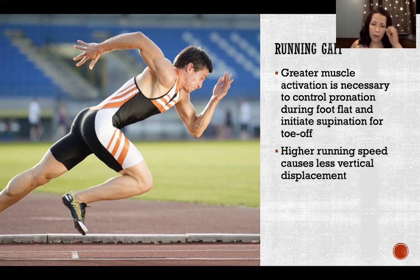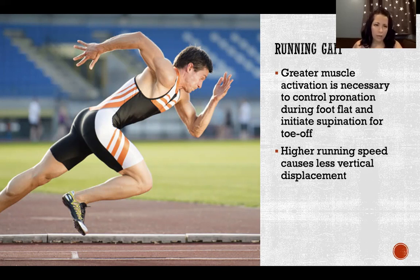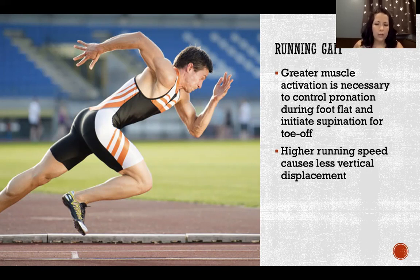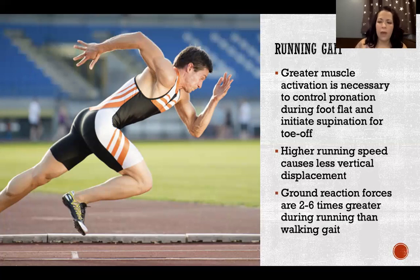Higher running speed causes less vertical displacement. When we go from a walking gait to a running gait we increase the amount of vertical displacement, but then as we increase our speed in running gait we decrease our amount of vertical displacement. So the faster we're going, the less superior-inferior displacement we have.